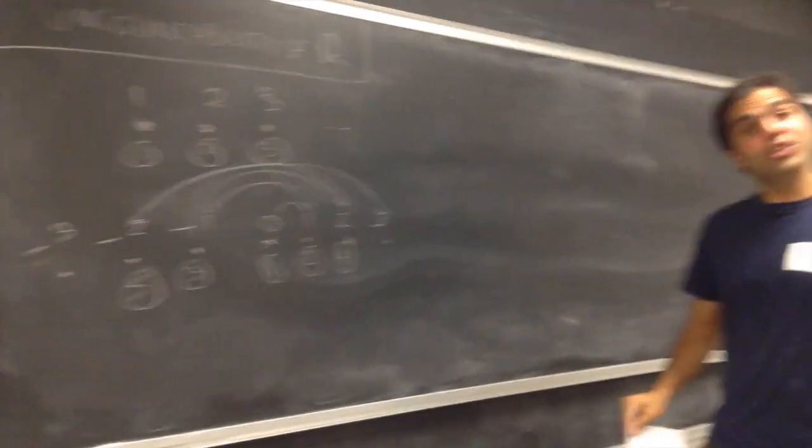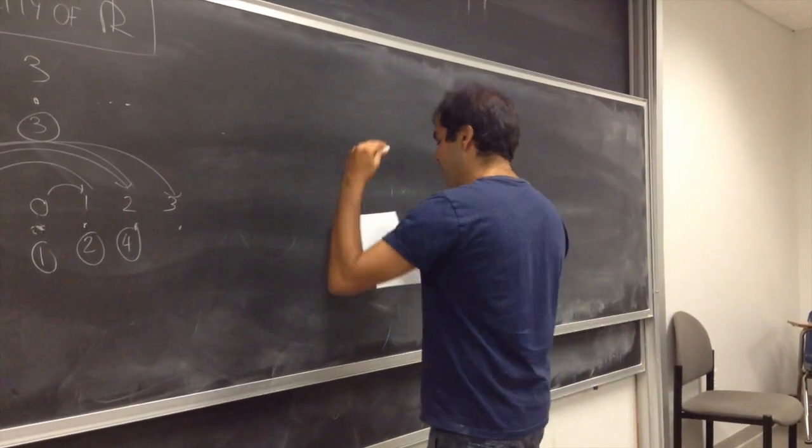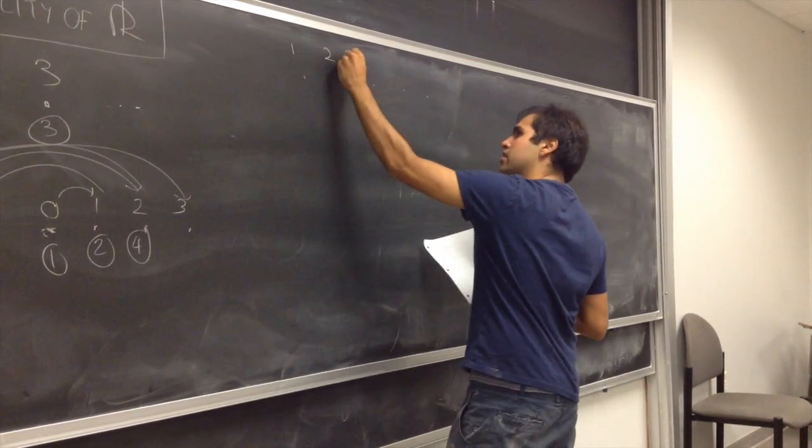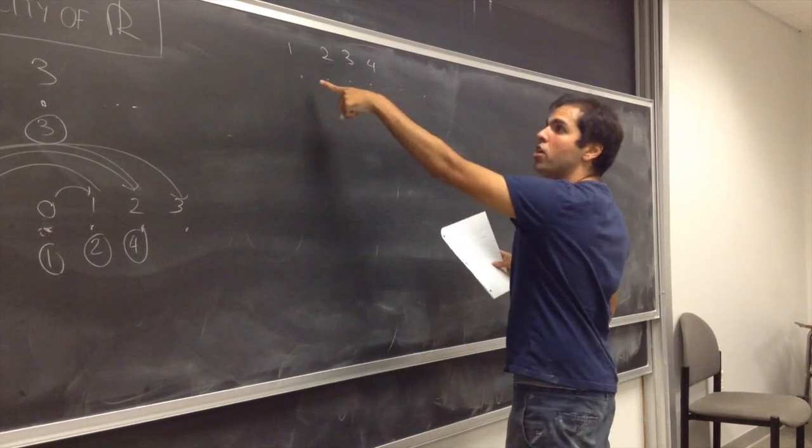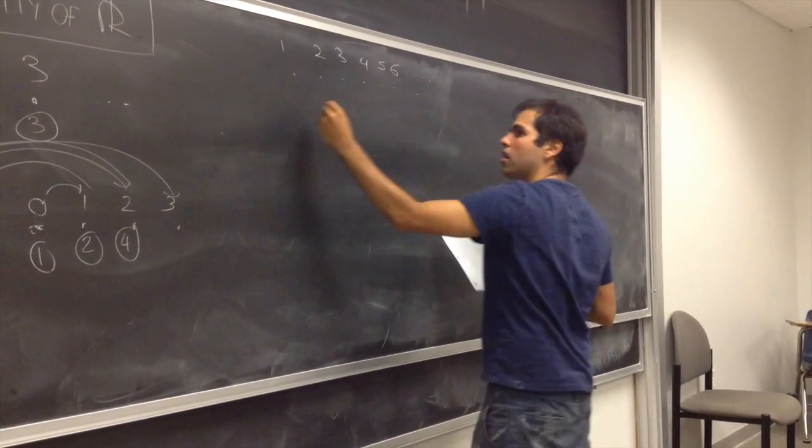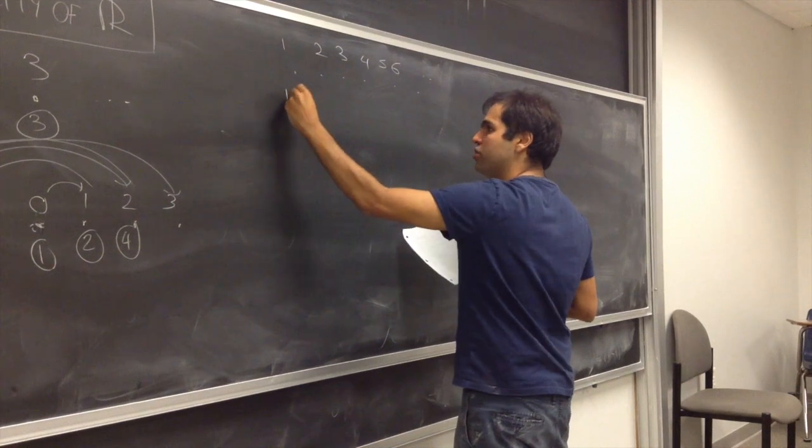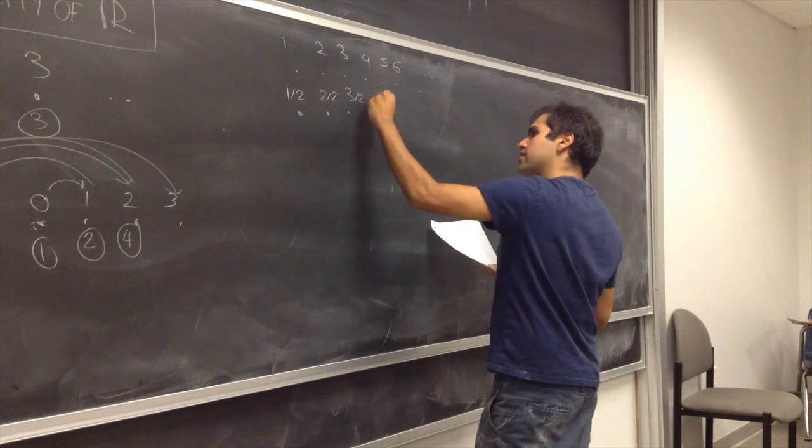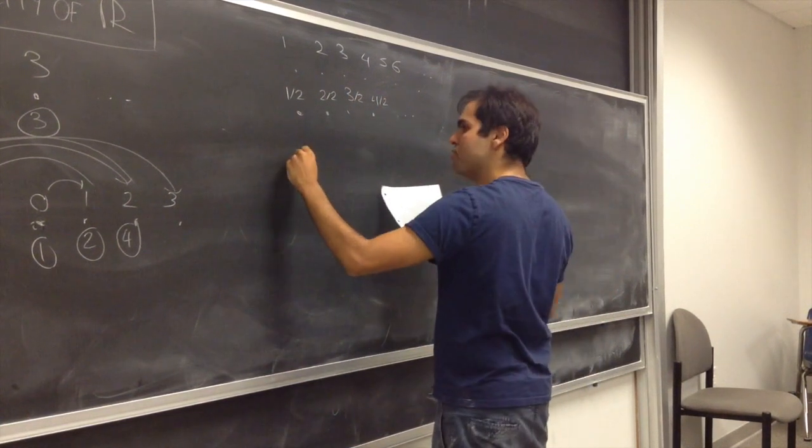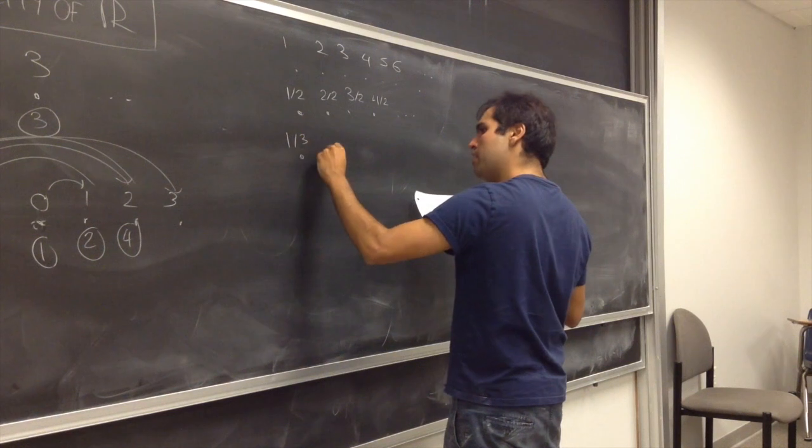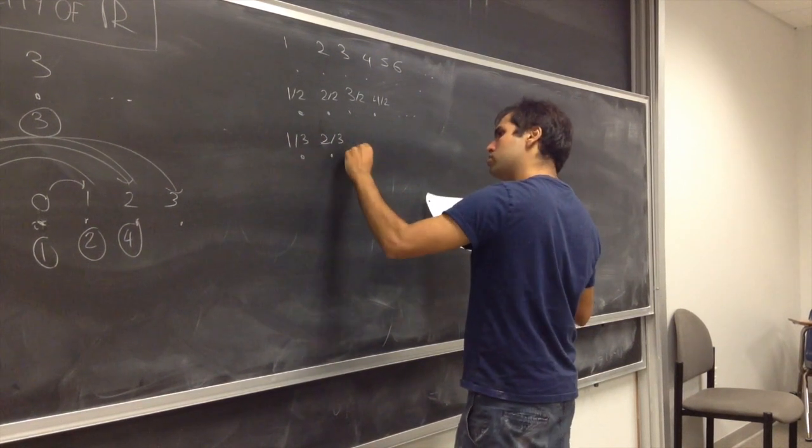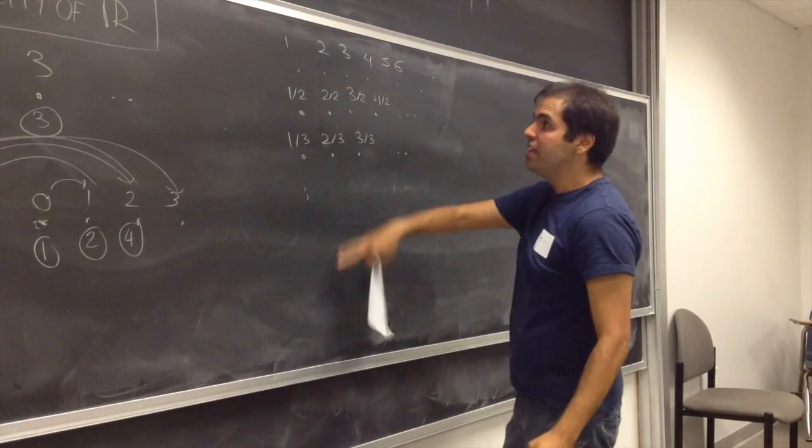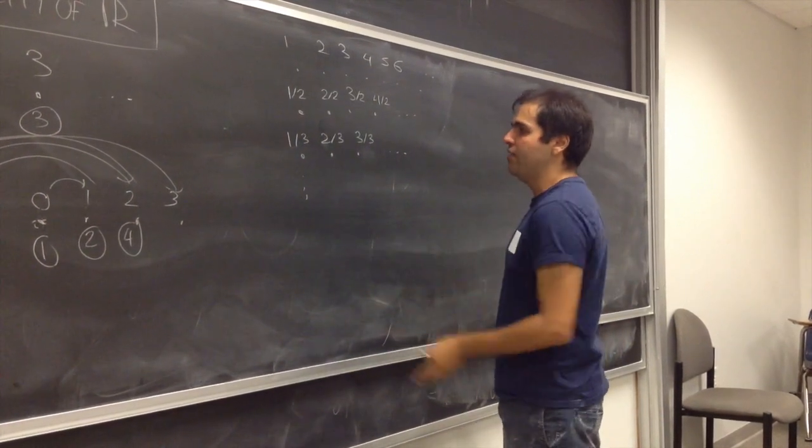It turns out you can also count the rational numbers in the following way. Mainly, list the rational numbers by the denominator. So here we have any number with denominator one, any number with denominator two. So, one-half, two-halves, three-halves, four-halves, et cetera. Any number with denominator three.